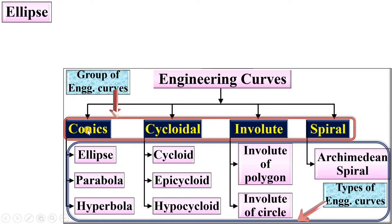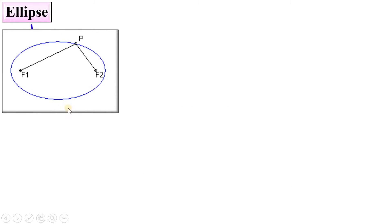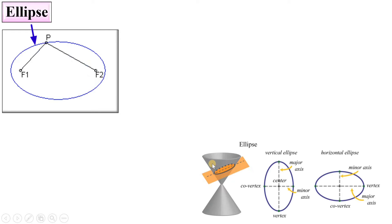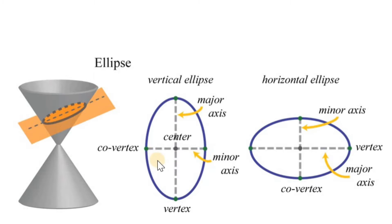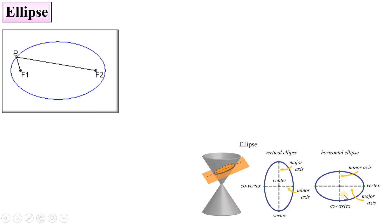Let us start with the first one in the conics group: the ellipse. Here you can see P is the moving point, whereas F1 and F2 are the fixed foci points. If you cut the cone in this way then you will get the ellipse. Here you can see the ellipse has a major axis and a minor axis. This is called the vertical ellipse, and this is called the horizontal ellipse.